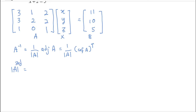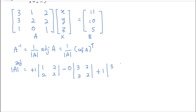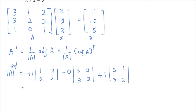We find the determinant of A using the third row, because there is a zero there to make the calculation easier. Expanding along the third row: plus 1 times |1,2; 2,2| minus 0 times |3,2; 3,2| plus 1 times |3,1; 3,2|. This gives 1×(2−4) − 0×(6−6) + 1×(6−3), which equals −2 + 0 + 3 = 1. So the determinant of A is 1.